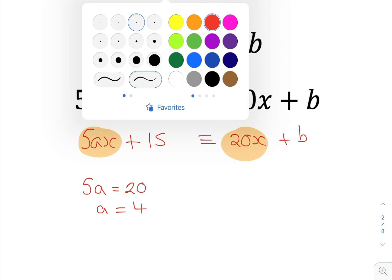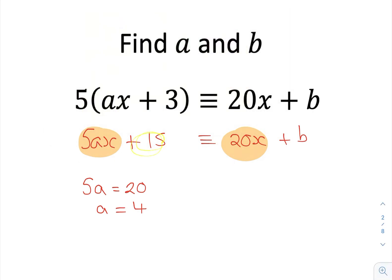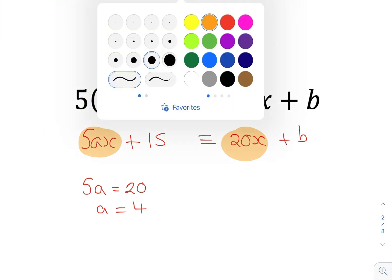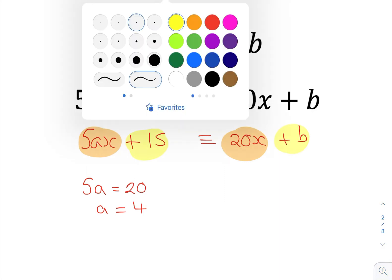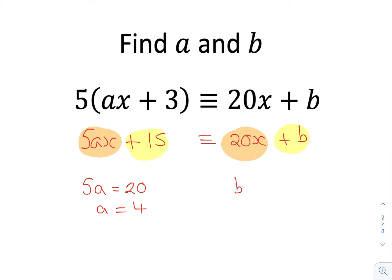The other bit can just be equated by looking at it. So 15 is equivalent to the numeric term on the other side, the bit with no algebra in it. So therefore I can just put those two equal to each other, and therefore I'll say that b is 15.